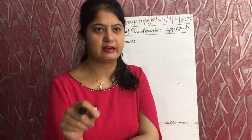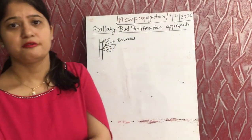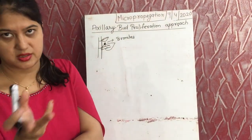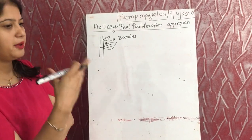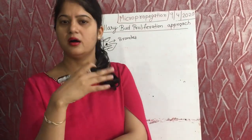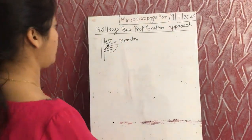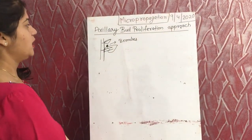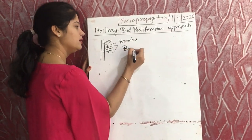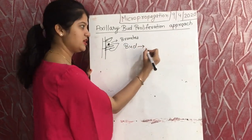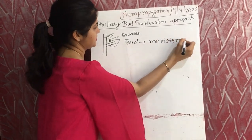So the main effort is only to develop rooting and further branches. A shoot will develop, but rooting development is the main focus in the axillary bud proliferation approach. In the axillary bud, meristematic cells are present — not differentiated, but meristematic cells.